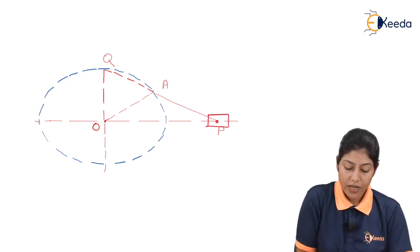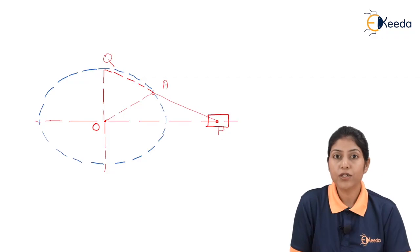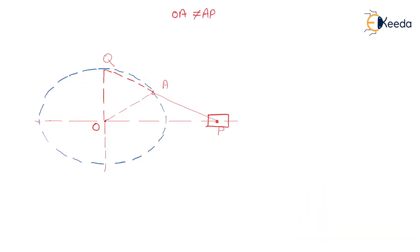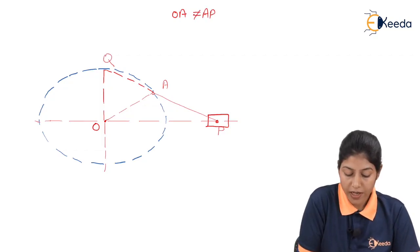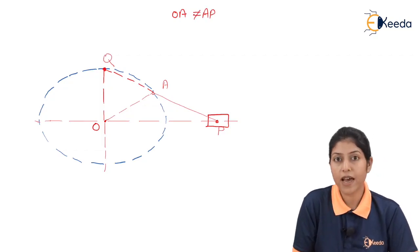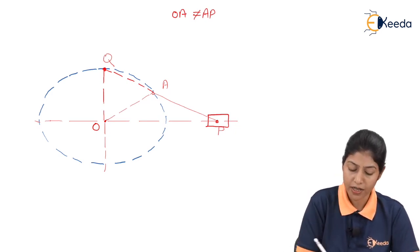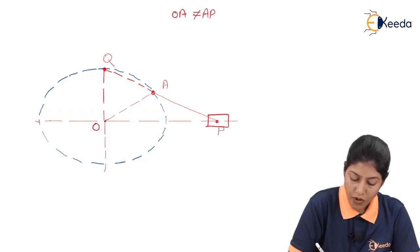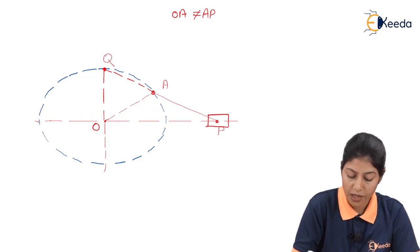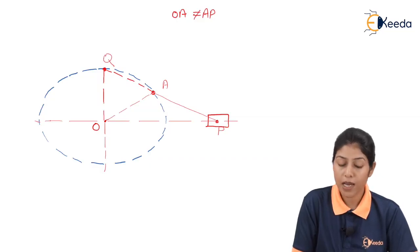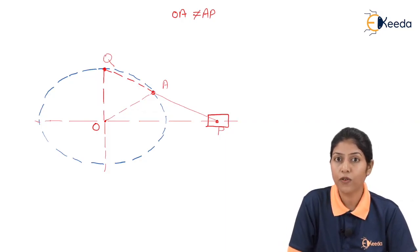This will be the exact modified Scott-Russell mechanism when OA is not equal to AP. In that condition, the extended point will not form exact straight line motion; it can form approximate straight line motion. However, point A will move along an ellipse. So this modified Scott-Russell mechanism is generally used to form an elliptical path for a particular mechanism.